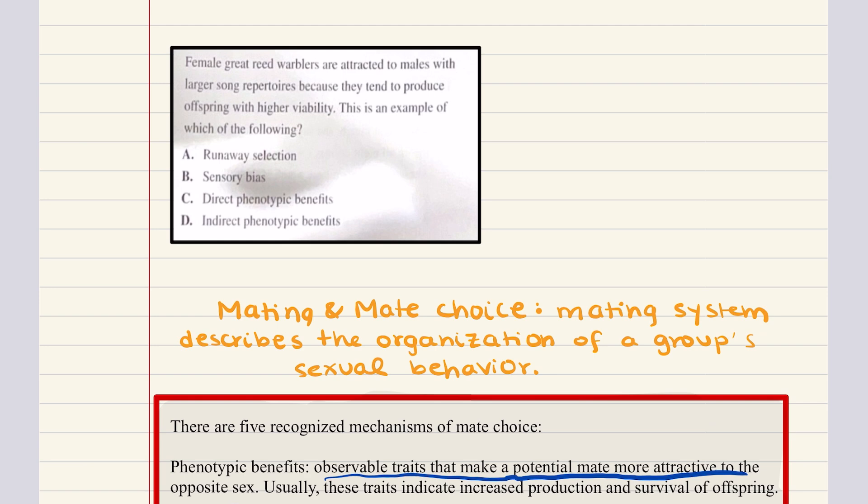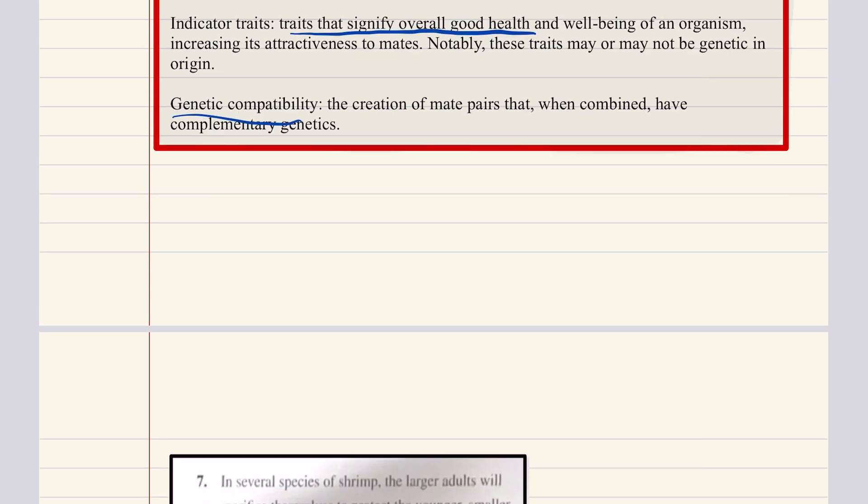Now going back to our problem, here, phenotypic benefits, this refers to observed traits in an individual that make them more attractive to the opposite sex. This is exactly what's being explained here when they say that these female warblers are attracted to males with larger song repertoires because they tend to produce offsprings with higher viability. And so the correct answer here is going to be either C or D, phenotypic benefits. Now we have to figure out whether it's going to be direct or indirect. We can go ahead and cancel out A and B. Now benefits associated with increased fitness through direct material advantages, these are direct benefits, while indirect benefits involve increased genetic fitness for the offspring. The latter makes more sense for this scenario. And so the correct answer for six is going to be D, indirect phenotypic benefits.